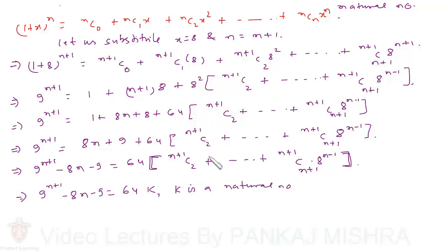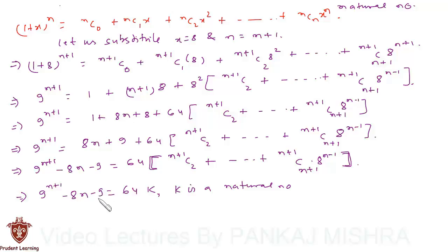Hence we can say that 9 raised to the power of n plus 1, minus 8n, minus 9 is divisible by 64 whenever n is a positive integer. This completes our solution.